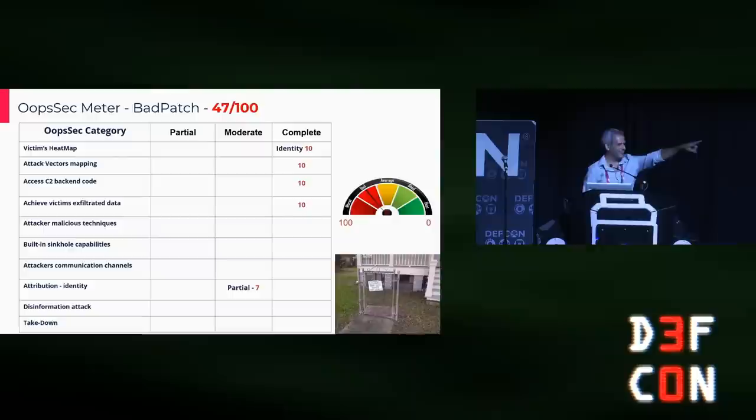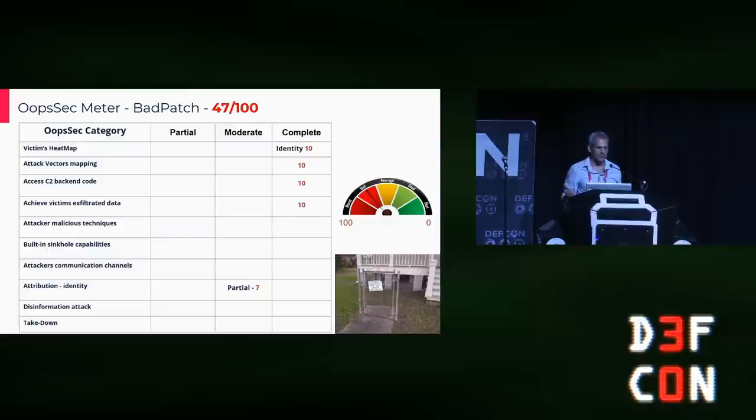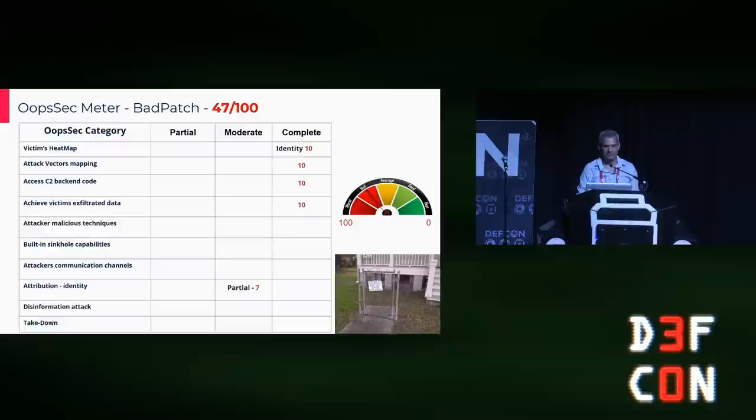What do you think the score should be? I give it 47. They failed because I was able to build a victim heat map, understand their attack vector, and access the C2 backend code. Different threat actors will make different mistakes, so we can compare them using the OOPSEC meter. Moving on to a different threat actor — this time I will focus on a cybercrime activity in Iran, and describe the five steps of the infection chain one by one and the OPSEC mistakes they made. Generally speaking, they are involved in stealing credit cards at large scale.